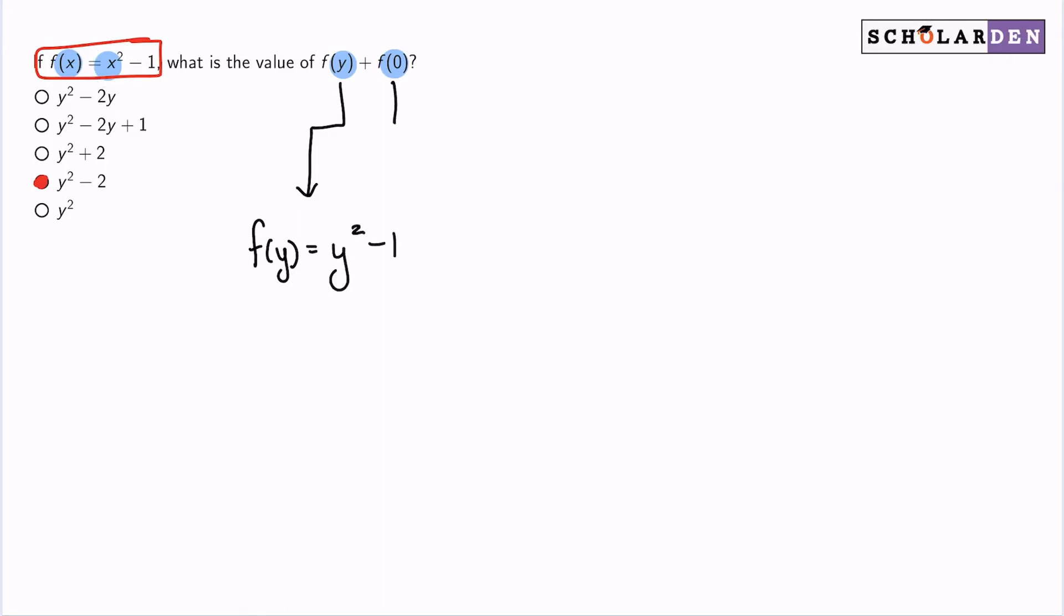And f of zero, same thing, we will replace every x that we see with zero. So instead of x squared minus one, it'll be zero squared minus one, which gives us negative one.